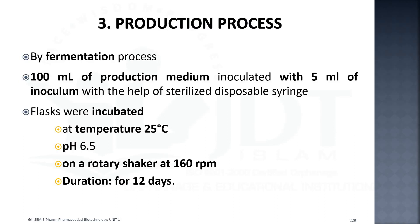The production process is carried out by fermentation. Typically, 100 ml of production media is used with 5 ml of inoculum, incubated at 25 degrees Celsius for 12 days. The pH is adjusted to 6.5 and agitation is maintained at 160 rpm using a rotary shaker, which is important for nutrient efficiency and secondary metabolite accumulation.